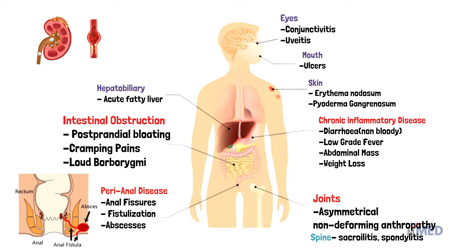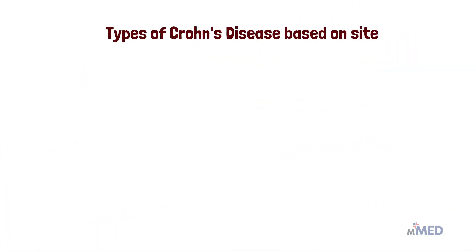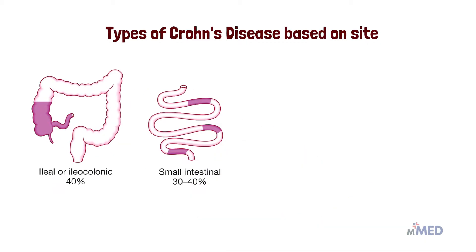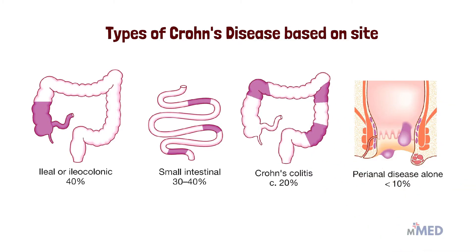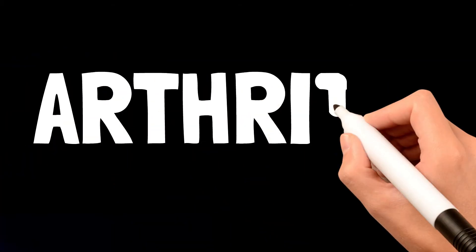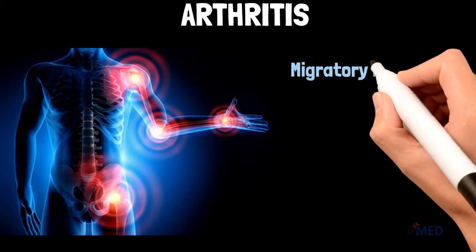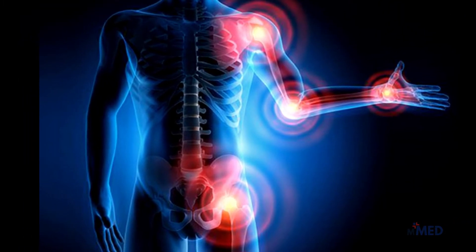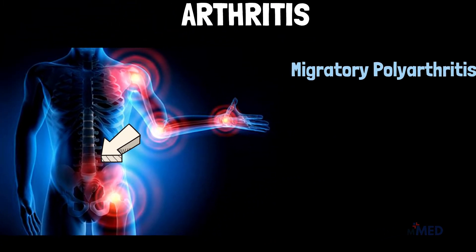Patients with Crohn's disease will often complain about joint pains, ulcers in the mouth, inflammation in the eye, and hepatobiliary conditions like acute fatty liver. Kidney stones and thromboembolic conditions are also sometimes seen. Regarding types of Crohn's disease based on site: around 40 percent have lesions in the ileocolonic area, 30 to 40 percent in the small intestinal area, around 20 percent will have Crohn's colitis, and less than 10 percent will have perianal disease alone.